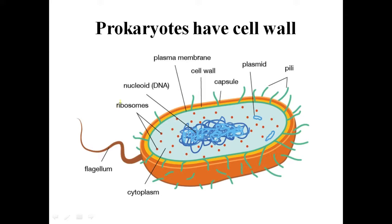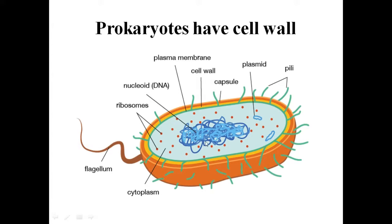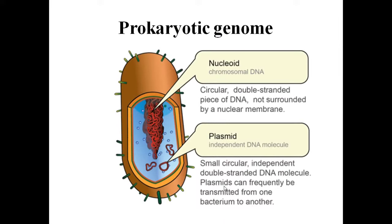Key points to remember: prokaryotes have a cell wall, and they have ribosomes but do not have membrane-bound organelles. They do not have a nuclear membrane. Their genetic material is free in the cytoplasm. There are two types of genetic material: genomic DNA and plasmid, and both are circular in nature.